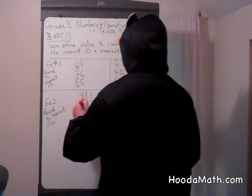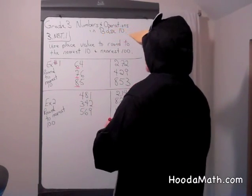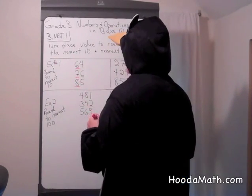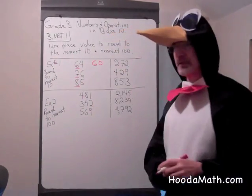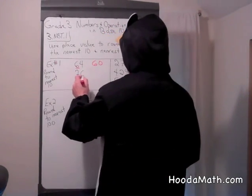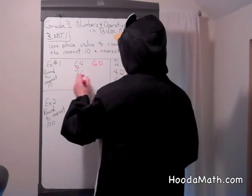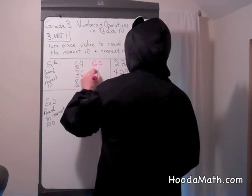So 64, we have to say is 64 closer to 60 or 70, and because 4 is less than 5, 64 is closer to 60. For 76, we look directly to the right, 6 is greater than 5, so 76 is closer to 80 than it is to 70.